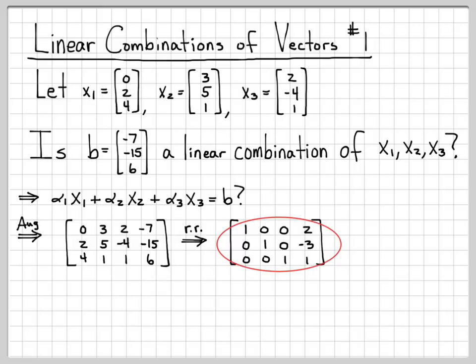From this matrix, it's very easy to see what the solution is. Just looking at it by inspection, we see that alpha 1 equals 2, alpha 2 equals negative 3, and alpha 3 equals 1.